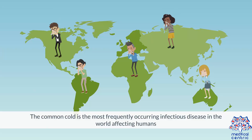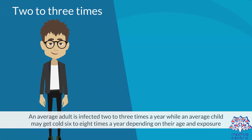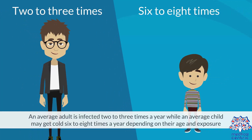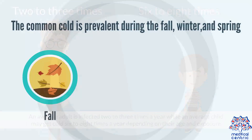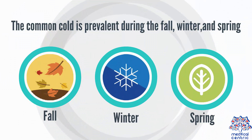The common cold is the most frequently occurring infectious disease in the world affecting humans. An average adult is infected 2–3 times a year, while an average child may get a cold 6–8 times a year, depending on their age and exposure. The common cold is prevalent during the fall, winter, and spring.